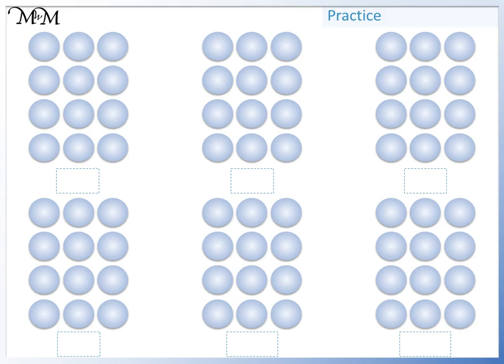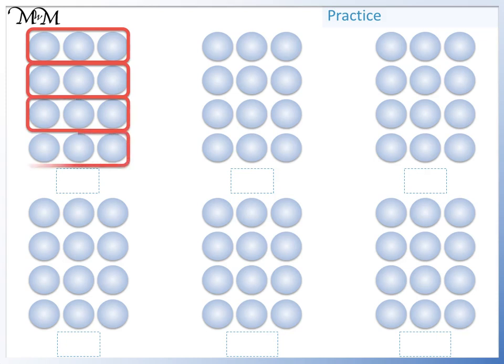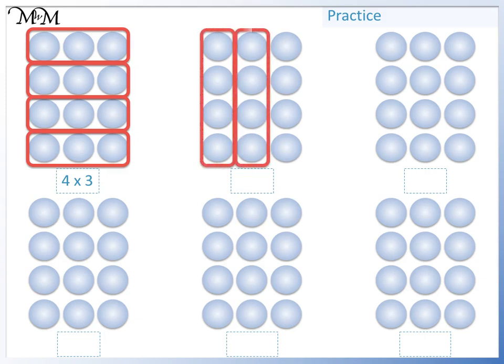We can begin by putting the counters into groups of 3. We have 1, 2, 3, 4 groups of 3, which we can write as 4 times 3. We could have groups of 4. We have 1, 2, 3 groups of 4, so 3 times 4.